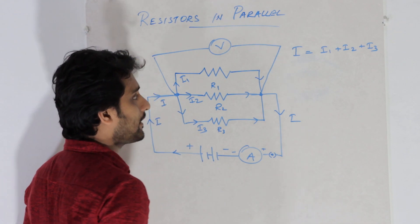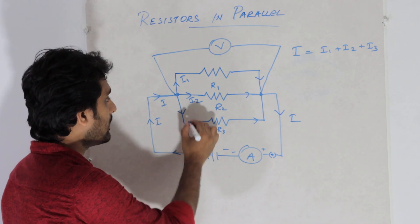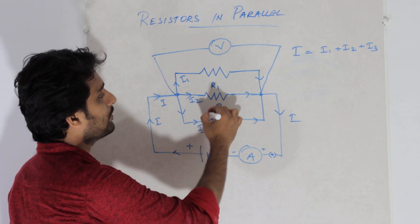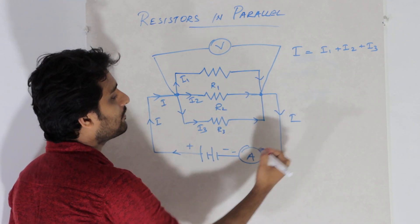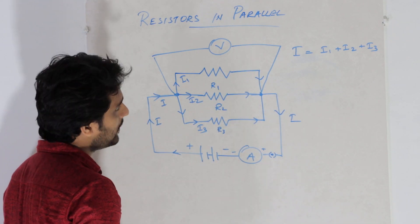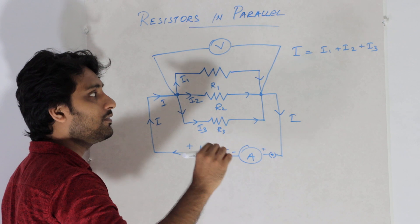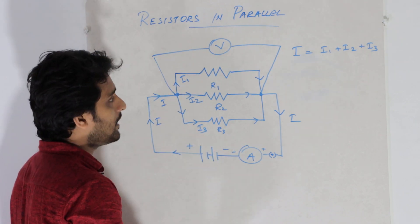Now, the total current is I. I1, I2, I3 are added. So I is equal to I1 plus I2 plus I3.